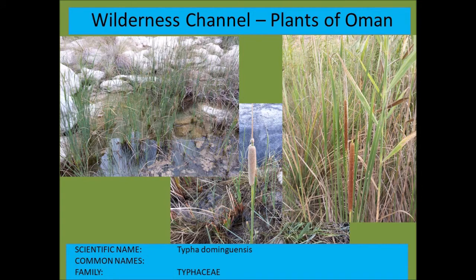This is Typha domingensis — the resident cattail or bulrush — from the family Typhaceae that occurs in Oman. The fluffy seed heads can be used to kindle fires, and the rhizomes are edible — they can be ground into a kind of flour and eaten.